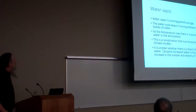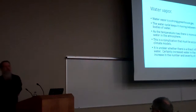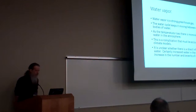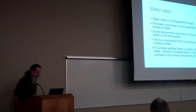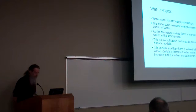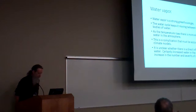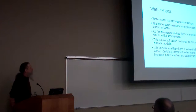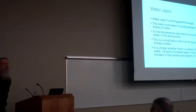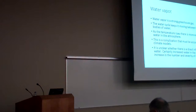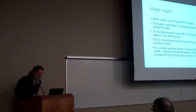Water vapor is an interesting issue regarding the greenhouse effect. It is a strong greenhouse gas — it traps lots of infrared. The water cycle keeps it moving between the atmosphere and bodies of water through evaporation and precipitation. As temperature rises, there is more evaporation and more water in the atmosphere. This is a complication that must be accounted for in climate models. Increased water in the atmosphere is related to the increase in number and severity of storms, but for long-term warming the biggest issue is still carbon dioxide.